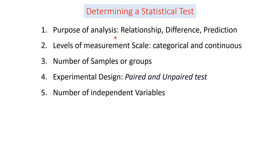We have to identify the purpose of the data analysis: either relationship, difference, or prediction. The second factor is the data type or level of measurement scale — whether it is categorical data (qualitative data) or continuous data (quantitative data), which can be expressed in fractions. The third factor is the number of samples or groups — it may be one, two, or three.